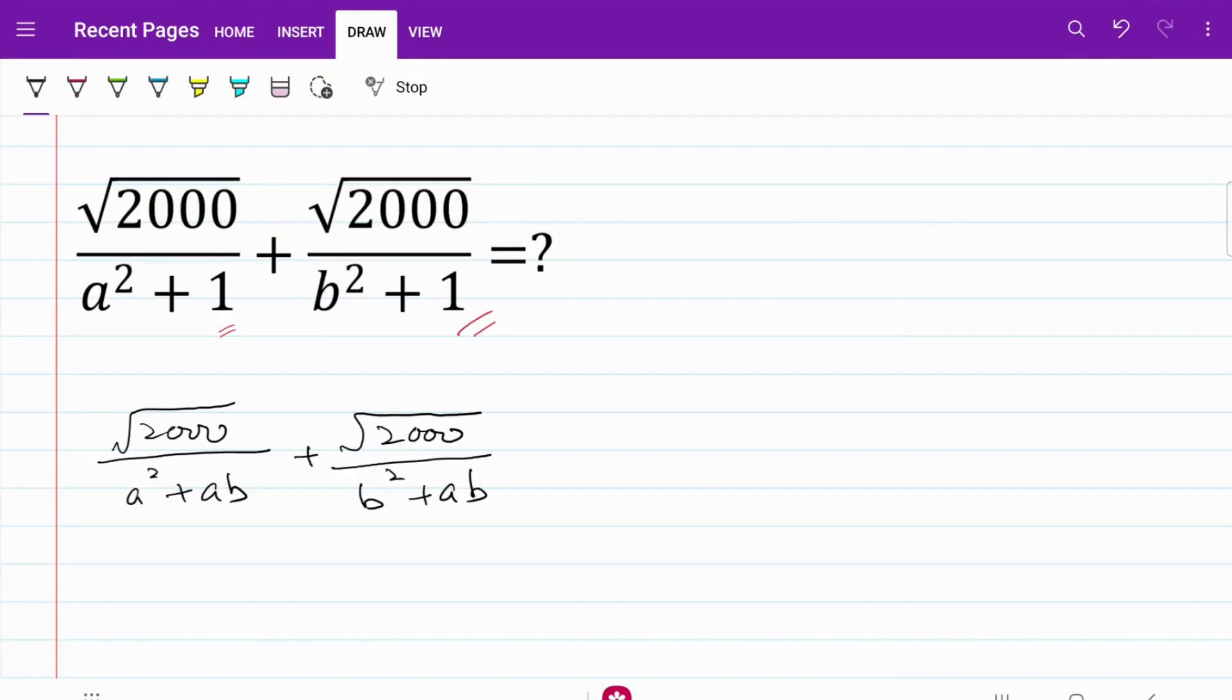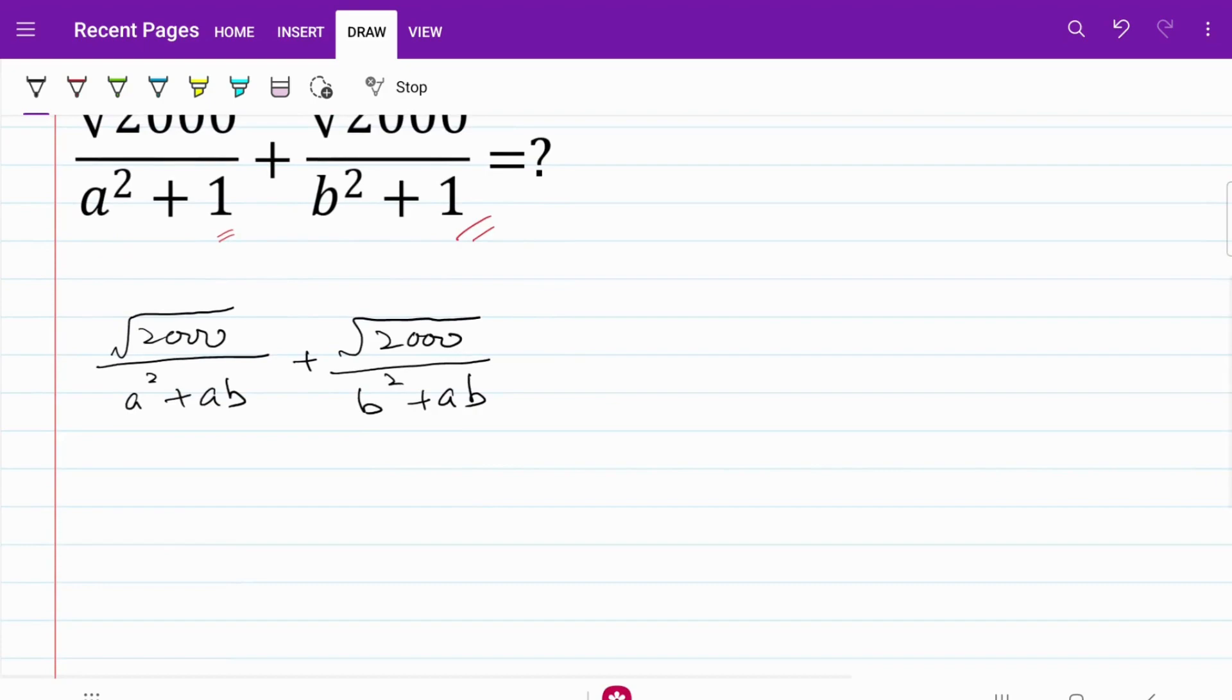From here, if I look at the terms on the denominator, I can isolate out the common ones. So what I have is now square root of 2000 over a and a plus b plus square root of 2000.